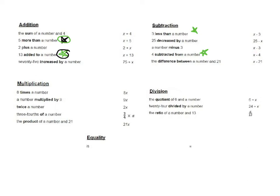The words that mean multiplication are: times, multiplied by, twice (which means multiply by two), of, and product. That little word 'of' often gets missed in word problems, but every single time it means multiplication — recognizing that 'of' means to multiply is really helpful. For division, the keywords are: quotient, divided by, and ratio. And for equality, the word 'is' always means equals, or you could also have the word 'equal.'